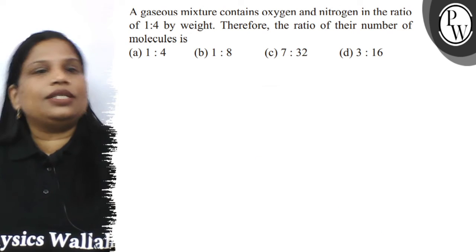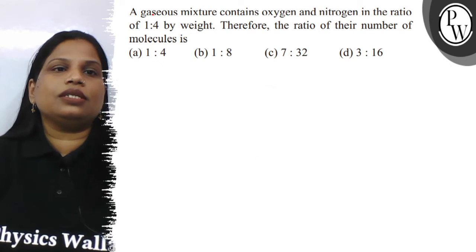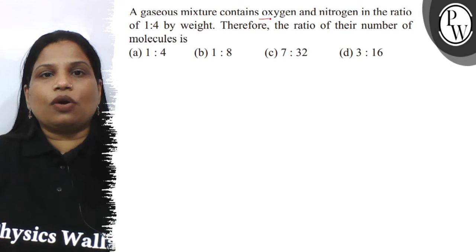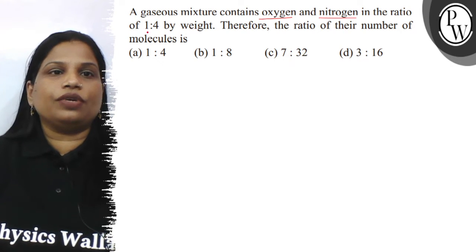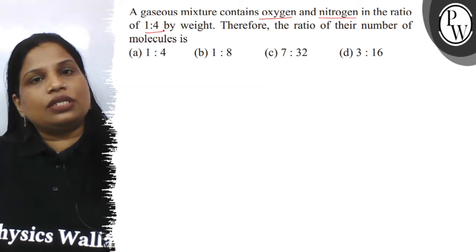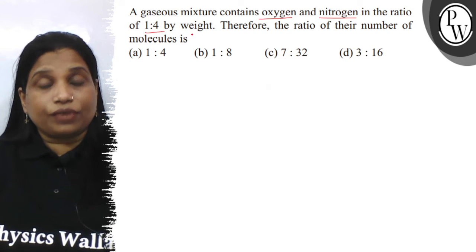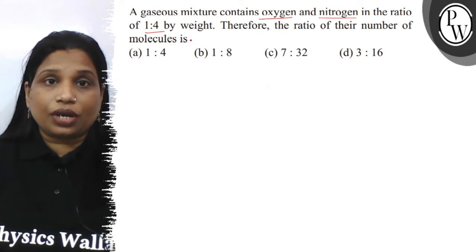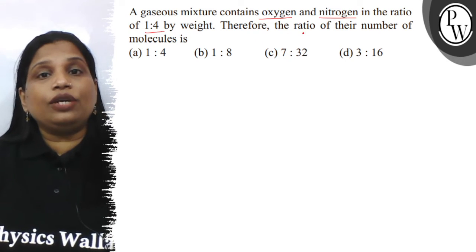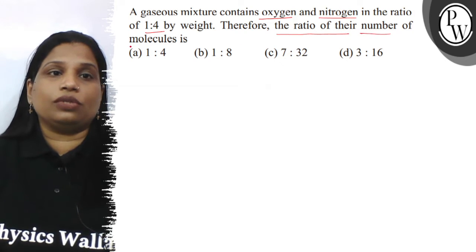Hello guys, let's read the question. The question says a gas mixture contains oxygen and nitrogen in the ratio 1 is to 4 by weight. We need to calculate the ratio of their number of molecules.